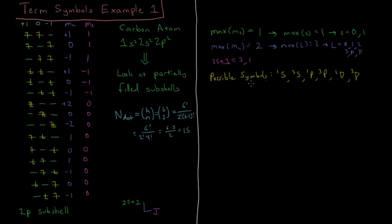We now determine which of these six possibilities are actually present, accounting for all 15 determinants. We start with the largest S and largest L: triplet D, where L=2, S=1. For a triplet D to exist, we need a single determinant with M_L = 2 and M_S = 1 simultaneously. We have both values individually, but not in the same determinant, so triplet D is eliminated.